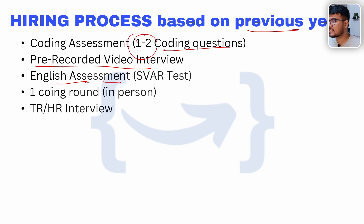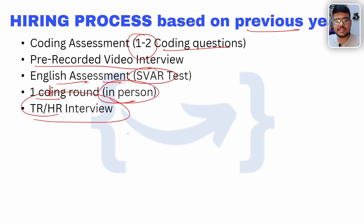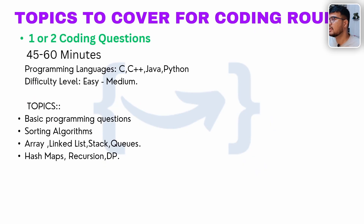The hiring process based on previous year trends includes: one to two coding questions, a pre-recorded English assessment (SVAR test), one coding round in person, and a TR and HR interview. You can expect the same pattern, but it might be that TR and MR are combined into one technical interview where coding questions, technical questions, and HR/MR questions are all covered.